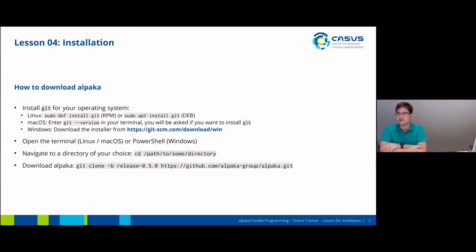On macOS, you would just enter a git command in the terminal and macOS will ask you if you want to install Git if you don't have it already. And on Windows, you need to download the installer and run it.